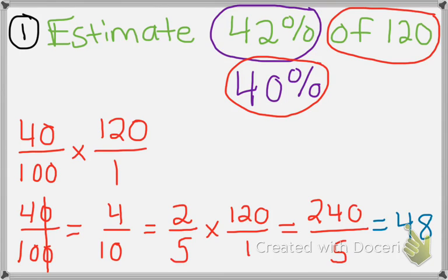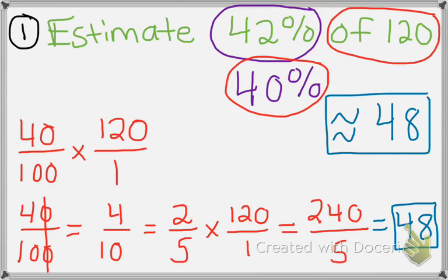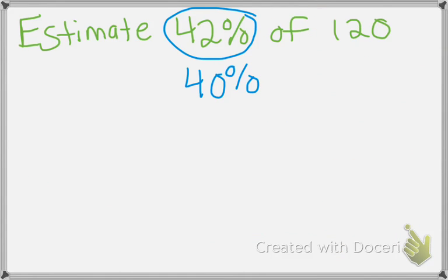Now we're going to do the same thing with the decimal. Now actually again, when it says estimate 42% of 120, your answer is going to be approximately 48, right? So we're estimating. So we're doing the same problem. Now we're just using decimal form. So instead of putting 40% as 40 over 100, we're going to use the decimal form. And how we do that is we take the decimal, and now since there's no decimal visible, we know that there's an invisible decimal right here. You move it 2 times to the left. So then you get 0.40, or just 0.4.